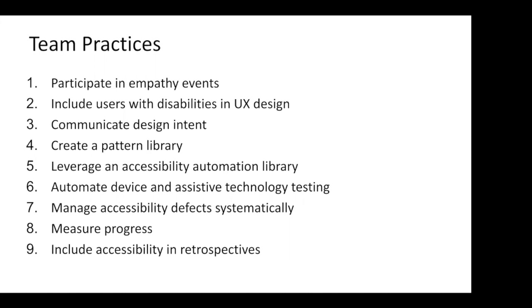You can automate device and assistive technology testing — render your app in a mobile simulator or test different browser and assistive technology pairings you want to support. The more of that you can automate the better. Manage your accessibility defects systematically: if QA finds accessibility defects and you're creating tickets, they shouldn't just sit in the backlog — they're defects no different from any other defects. Prioritize them accordingly. You should also be measuring your progress; if you can track defects per sprint, bring that up in retrospectives and tweak your process to stop shipping accessibility issues.